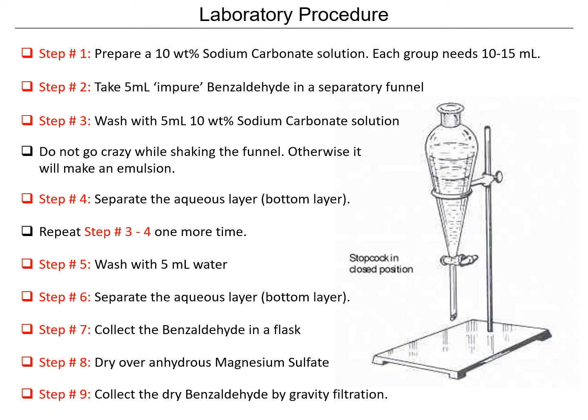Our procedure is as follows. We're going to prepare a 10% weight solution of sodium carbonate — everyone will need around 10 to 15 ml. We're going to take 5 ml of impure benzaldehyde inside the separatory funnel and wash it with 5 ml of 10% sodium carbonate solution. The idea is not to shake too vigorously, otherwise it will make an emulsion. Separate the aqueous layer, which is going to be the bottom layer. Repeat this wash one more time.